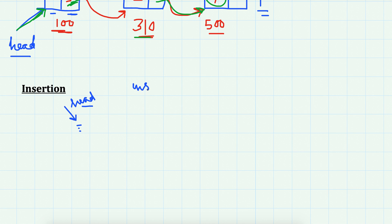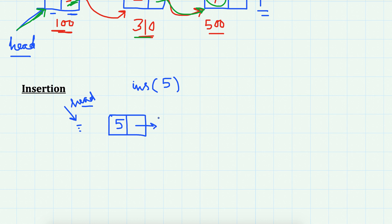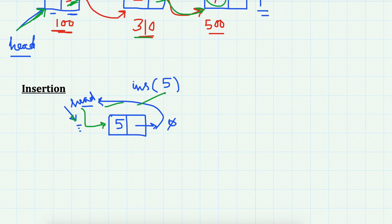Suppose I want to insert 5 into a linked list of integers. The first step is to create a node, store 5 in the data section, and in the next section make it point to the earlier head. Since head was pointing to nil, its next is null. Then make the head point to this newly created node. Now head is pointing to 5 and its next is pointing to null.